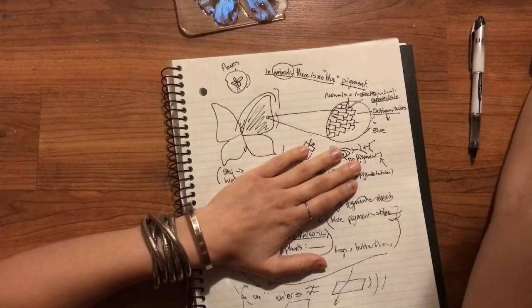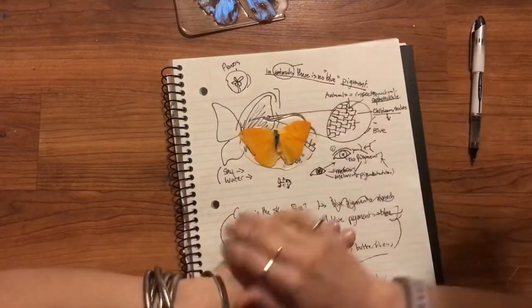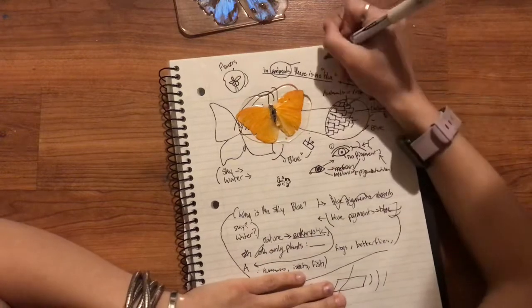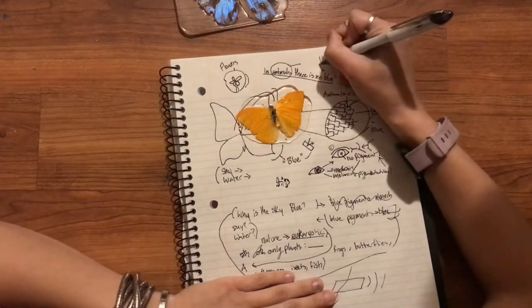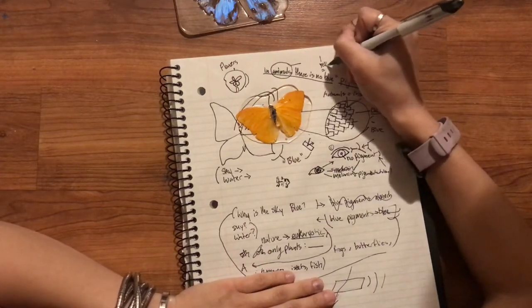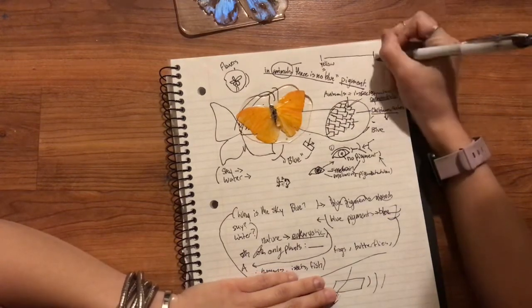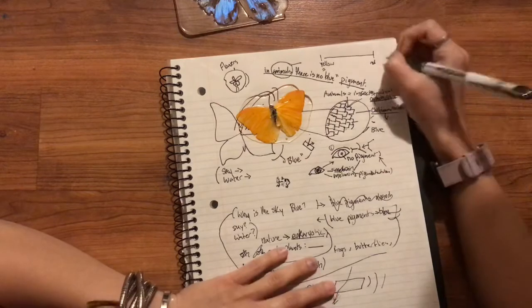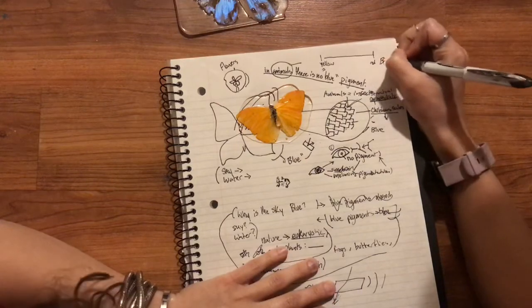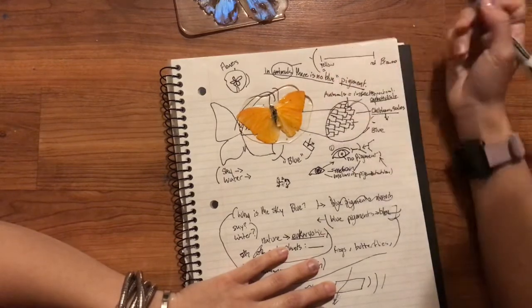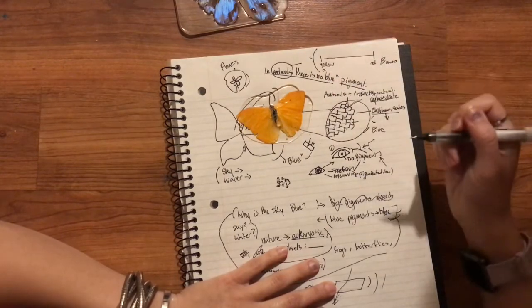And with these guys, melanin is usually a color scale from yellow to—it's basically a big scale of red and that can include browns. But that's natural pigmentation of animals.